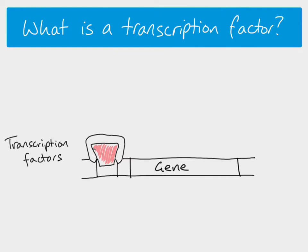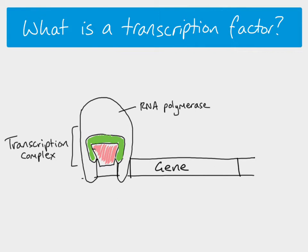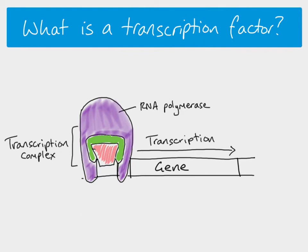Sometimes there's one transcription factor involved, but often you have more than one. Here we can see two transcription factors that bind to each other and are both bound to the DNA. When those two are in place, it's called the transcription complex, and the RNA polymerase molecule is then able to bind to it.